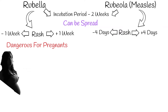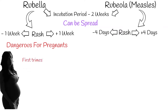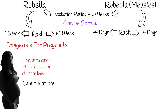Rubella infection is dangerous for pregnant women — 80-90% of mothers who contract rubella within the critical first trimester have either a miscarriage or a stillborn baby. Problems are rare after the 20th week of pregnancy. Rubella can also have other serious complications like testicular swelling, encephalitis, and inflammation of nerves.